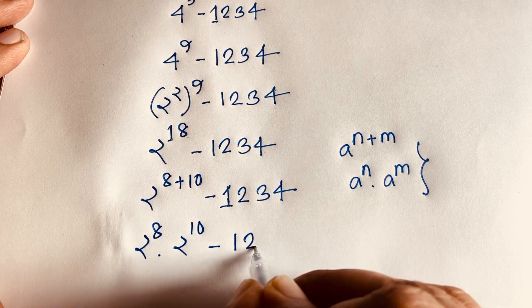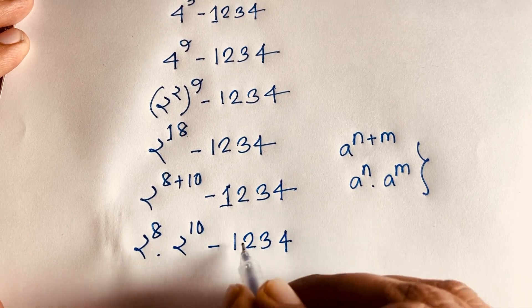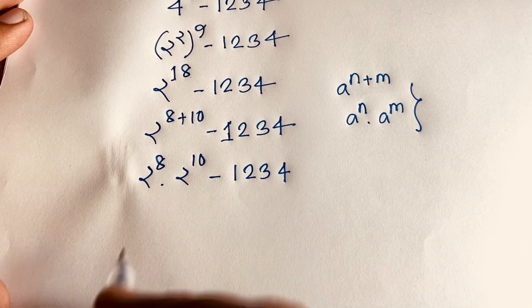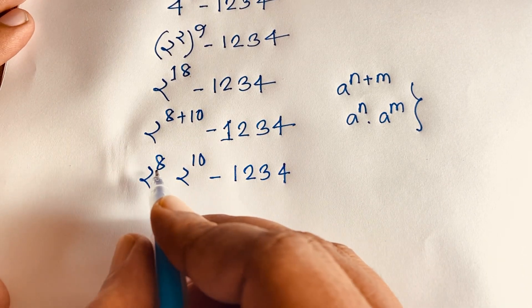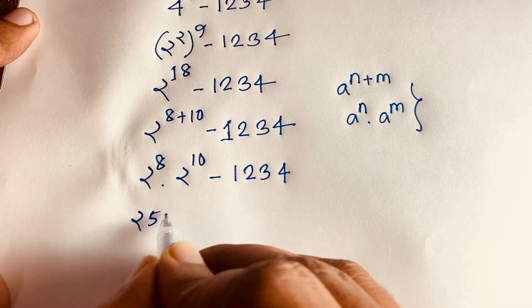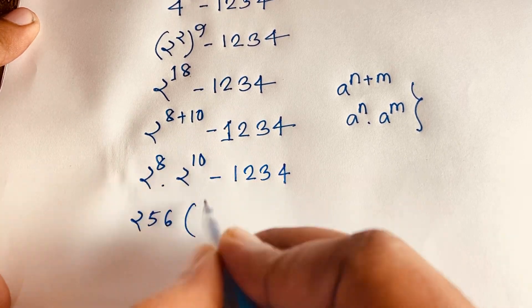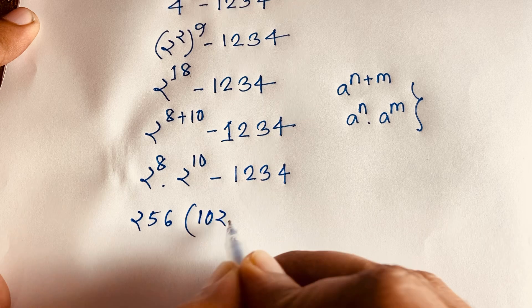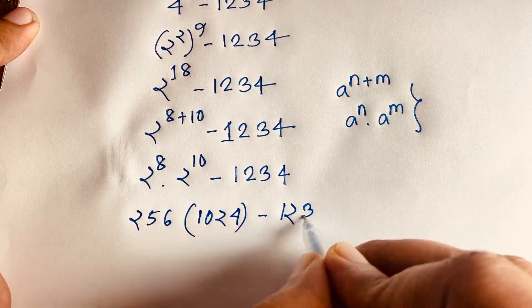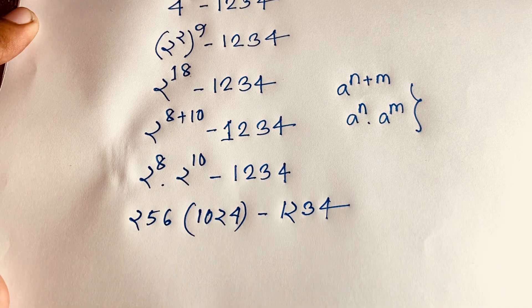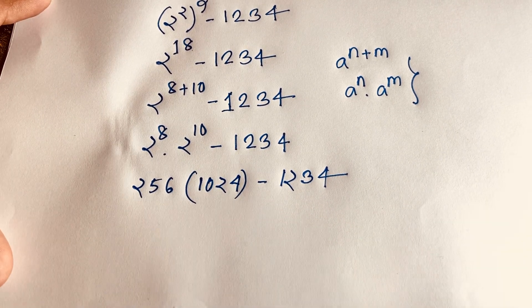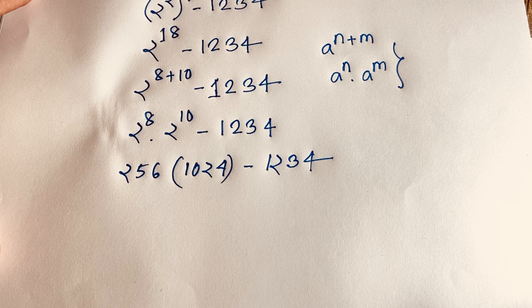Now you can see easily, 2 to the power 8 equals 256, and 2 to the power 10 equals 1024. So we have 256 times 1024, minus 1234.